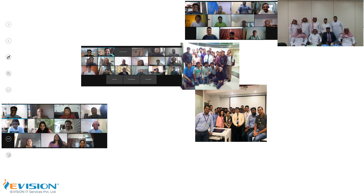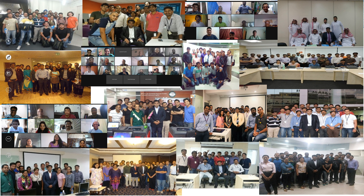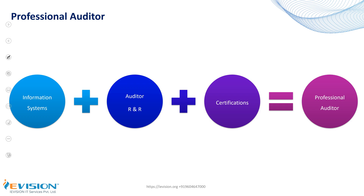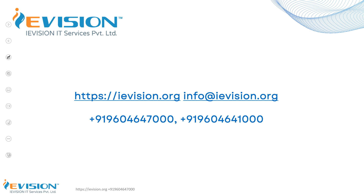Here are some of our training glorious moments. To become a professional auditor, you need a good understanding of information systems and must fulfill auditor roles and responsibilities. You are expected to have certain certifications to achieve your objective of becoming a professional auditor. iVision has helped thousands of professionals achieve their career objectives, and we are here to help you.